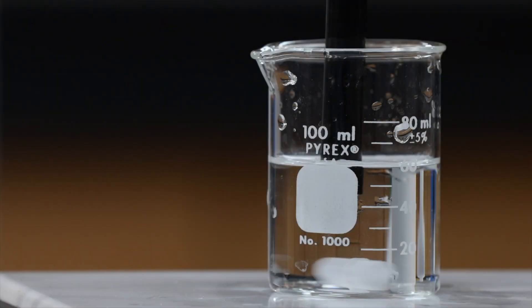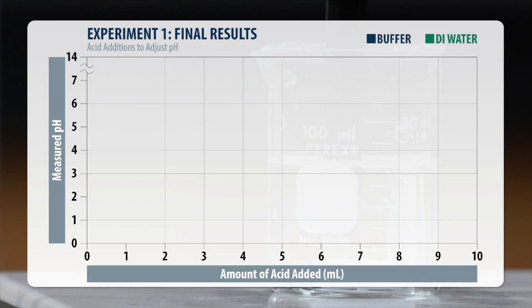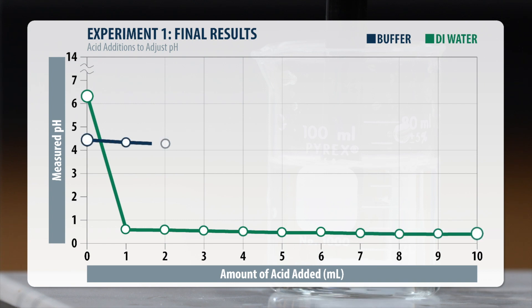Let's look at the final results. By adding acid, we've dropped the pH of the water from 6.31 to 0.43. But the buffer? It held pretty steady and only dropped from 4.66 to 3.24.